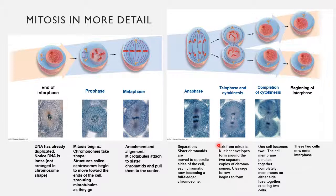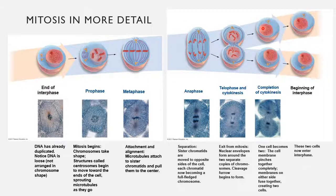In telophase and cytokinesis, the cell is preparing to exit from mitosis. The nuclear envelope begins to pinch in — they call this a cleavage furrow — forming around the two new separated groups of chromosomes. Finally, the completion of cytokinesis officially turns one cell into two. The cell membrane completely pinches in and you have two new cells that are exact copies of the original. The DNA then goes back to being unorganized and loose, and these two new cells move again into interphase.